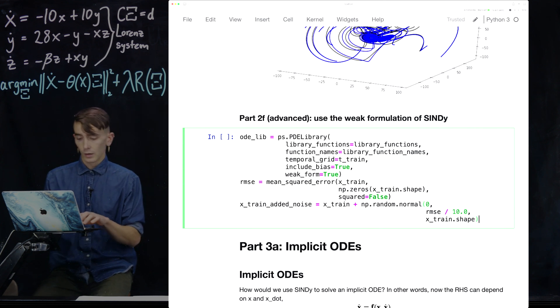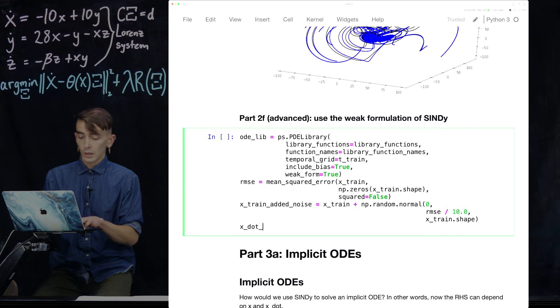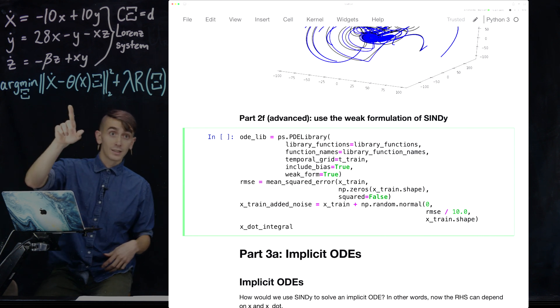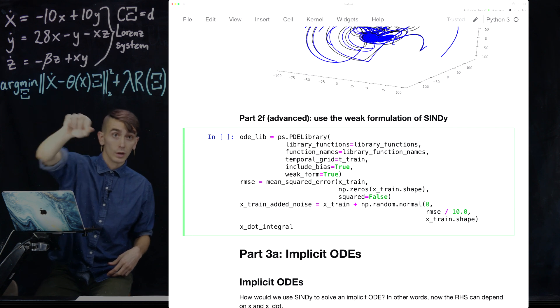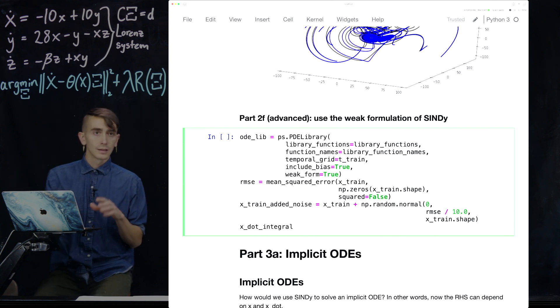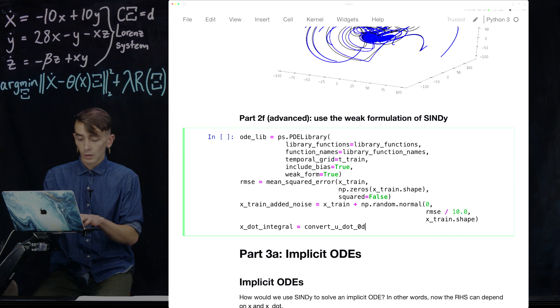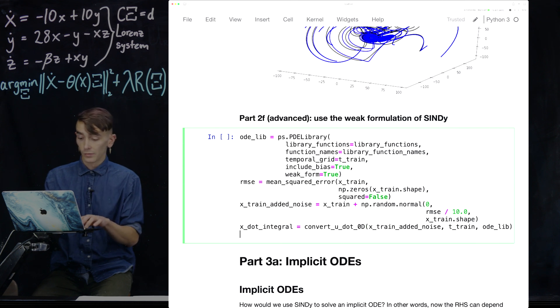So, once again, we do this. We define... We add noisy Gaussian noise to the training data. And we're gonna add 10% noise to the Lorenz data. And now, we need to actually... The weak form actually integrates both sides of this equation. So, we need to compute the integral of X dot. I'm not gonna explain the details too much here. But basically, you need to do this conversion. Where we put in the training data with noise, the time base of that training data, and the library that we just defined. It'll give us back this X dot integral.